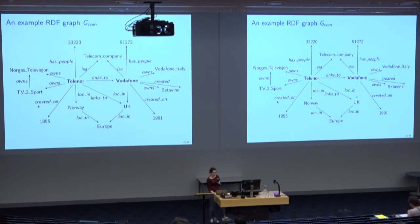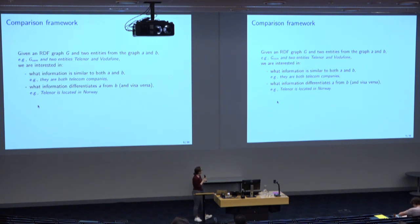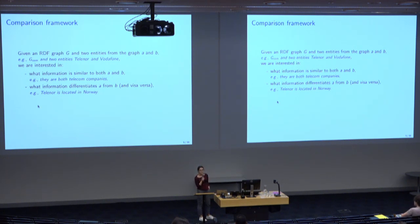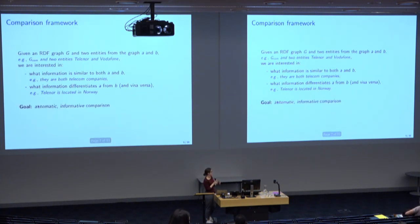We think of comparison in the following terms. Given two entities in an RDF graph, for instance Telenor and Vodafone, we would like to find patterns in data about them that are common for the two entities — for instance, that both are telecom companies — which we call a similarity. We're also interested in patterns that differentiate the two entities, such as Telenor being in Norway while Vodafone is a UK company, which we call differences. We would like to do this automatically in a domain-independent manner and generate informative comparisons.